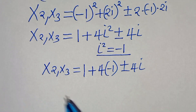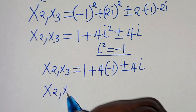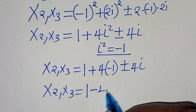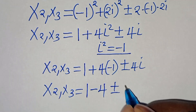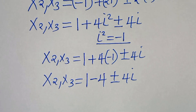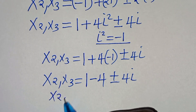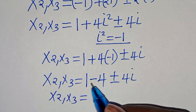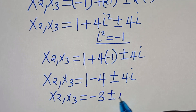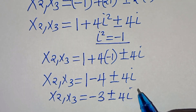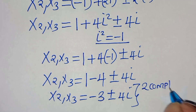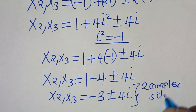So x₂, x₃ equals 1 minus 4, which is minus 3, plus or minus 4i. These are two complex solutions.